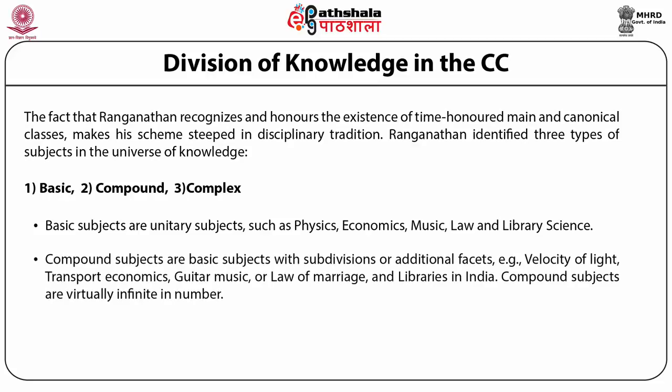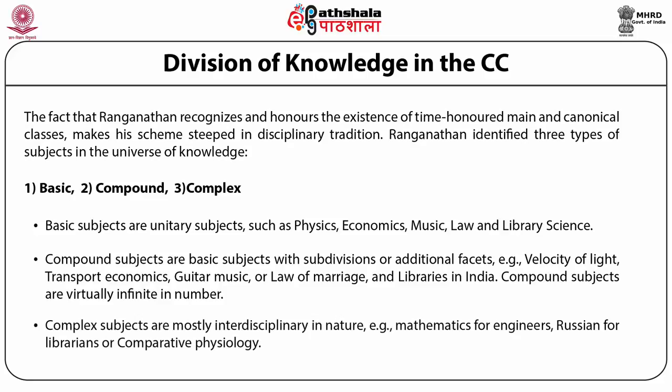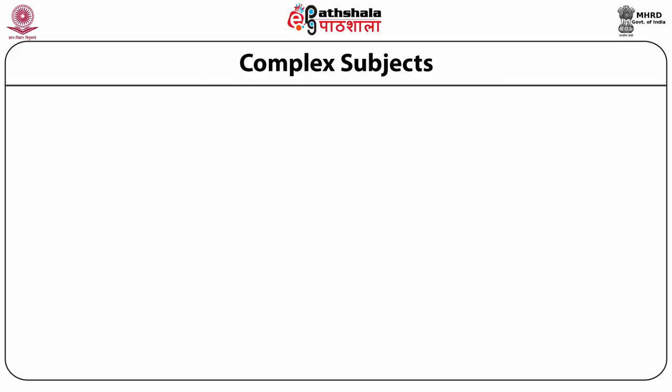Compound subjects are basic subjects with divisions or additional facets — for example, velocity of light, transport economics, guitar music, law of marriage, or libraries in India. Compound subjects are virtually infinite in number and always increasing. Complex subjects are mostly interdisciplinary in nature — for example, mathematics for engineers, comparative physiology, or geophysics. Complex subjects are also called two or more phased subjects, formed by phase relations.